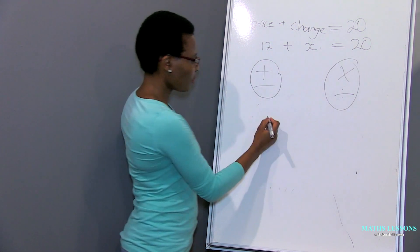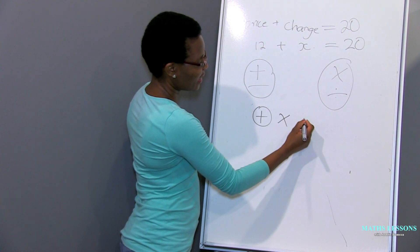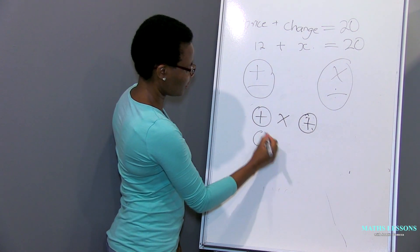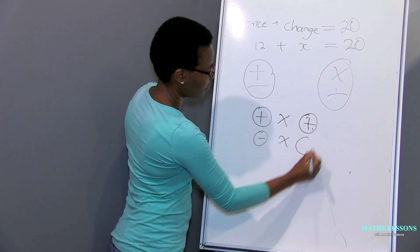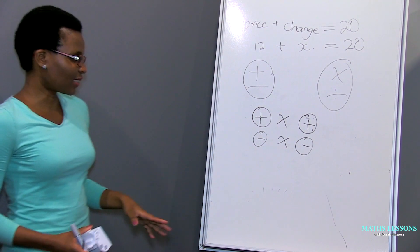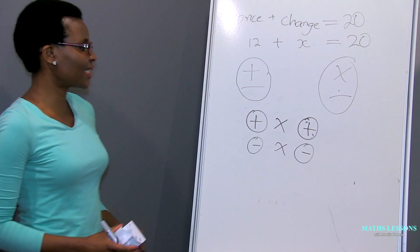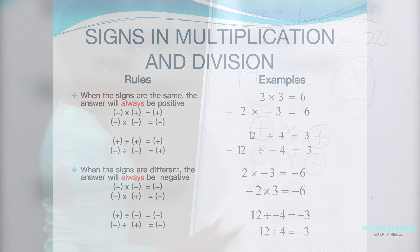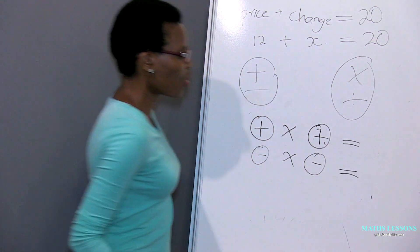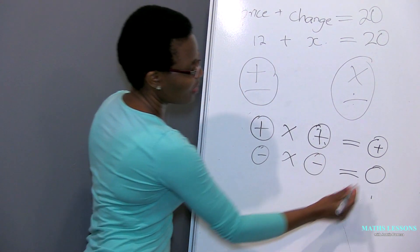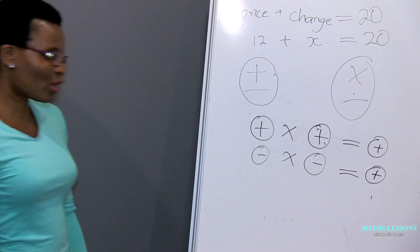Let's look at multiplication and division. Here you just look at whether the signs are the same or not. The rule says: if the signs are the same, the answer will always be positive — it doesn't matter if the signs were both negative or both positive, your answer will always be positive. So whether you have positive times positive or negative times negative, you get a positive answer.